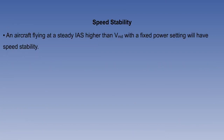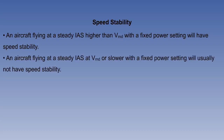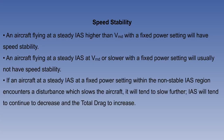An aircraft flying at a steady IAS higher than VMD with a fixed power setting will have speed stability. An aircraft flying at a steady IAS at VMD or slower with a fixed power setting will usually not have speed stability. If an aircraft at a steady IAS at a fixed power setting within the non-stable IAS region encounters a disturbance which slows the aircraft, it will tend to slow further. The IAS will tend to continue to decrease and the total drag to increase.